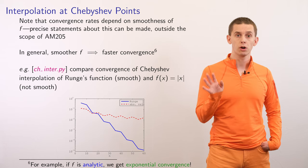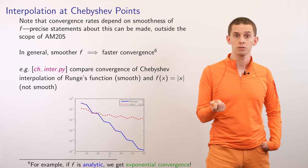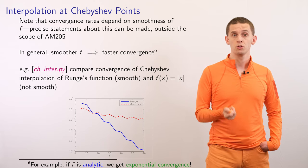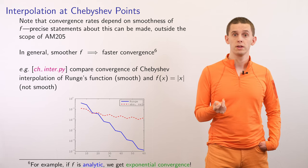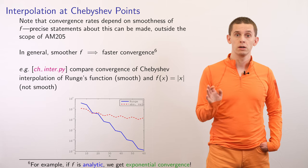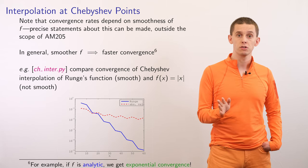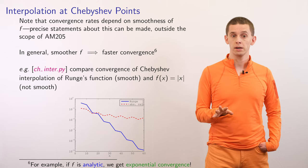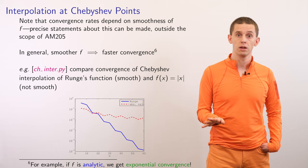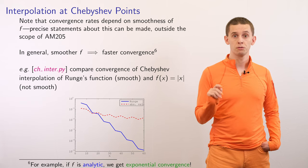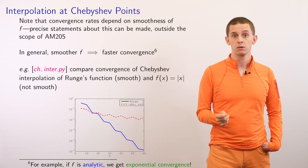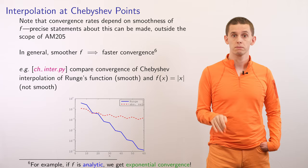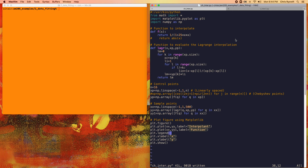We're now going to look at a code example examining convergence of Chebyshev interpolation to Runge's function, which is smooth, and also to the absolute value function f(x) = |x|. The plot shows the convergence of the infinity norm bound as a function of the number of interpolation points used. We see very rapid convergence for Runge's function. For the absolute value function, we still see convergence, although it's much slower.